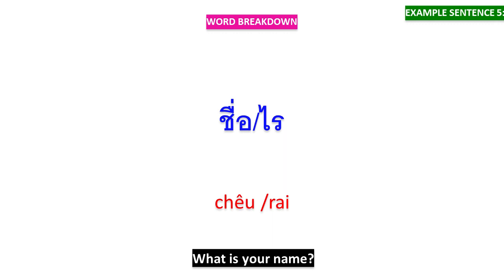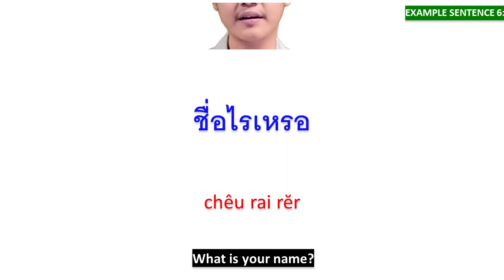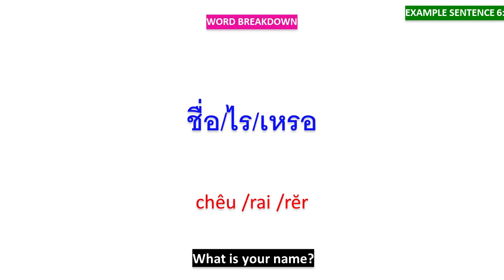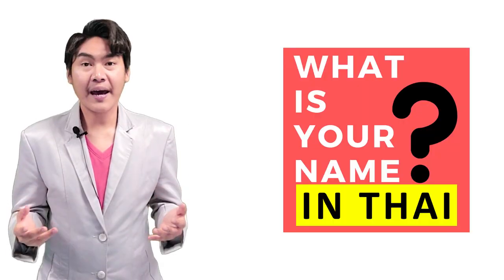ชื่อไร is used for informal language. ชื่อไรเหรอ — ชื่อ means 'your name', ไร means 'what'. เหรอ is a particle of this sentence. ชื่อไรเหรอ is also used for informal language.